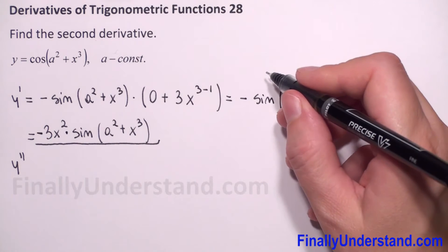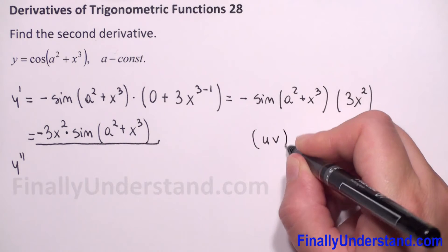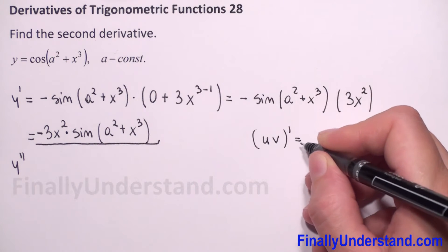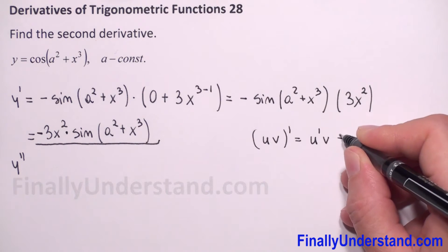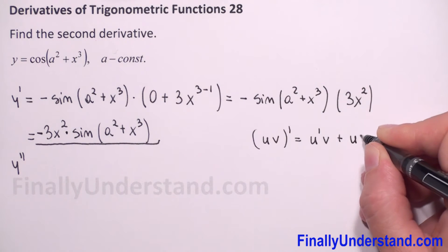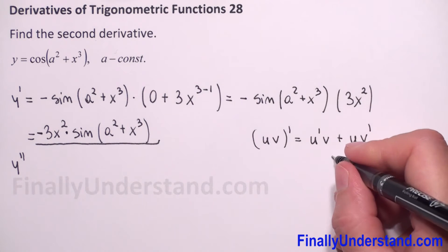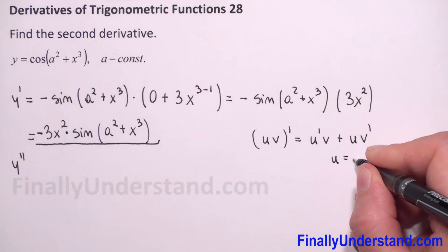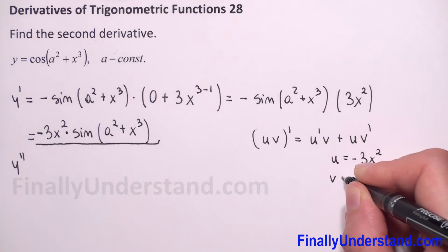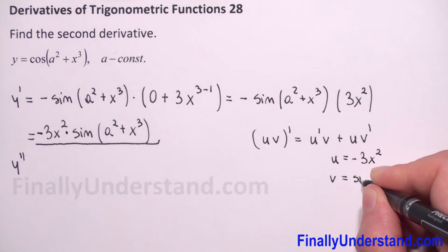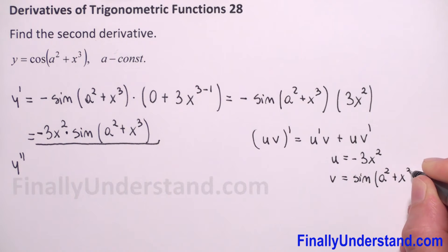Let me remind you: when we have (u times v) prime, this equals u prime times v plus u times v prime. In our case, u is equal to negative 3x squared, and v is equal to sine of (a squared plus x to the third power).